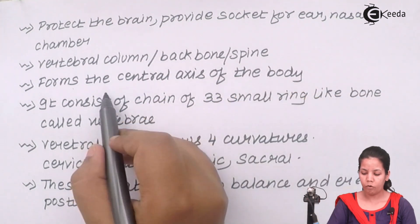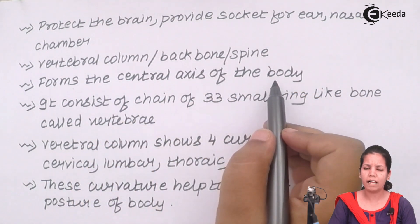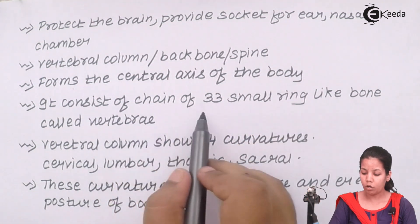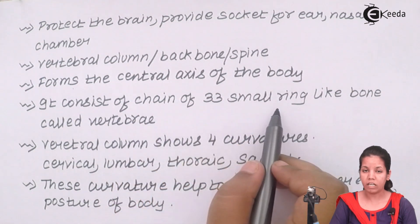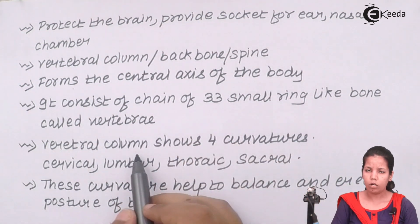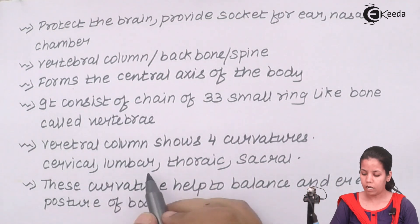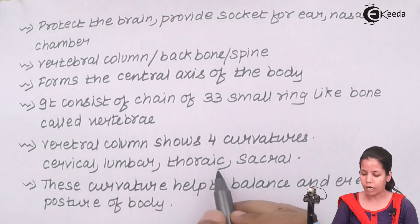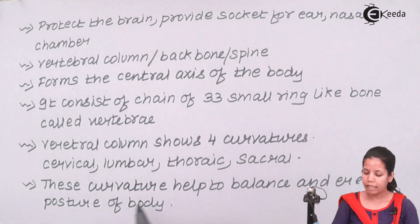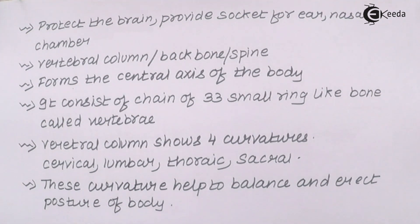The vertebral column forms the central axis of the body. It consists of 33 small chain-like rings called vertebrae. The vertebral column or spinal cord shows four curvatures: cervical, lumbar, thoracic, and sacral.